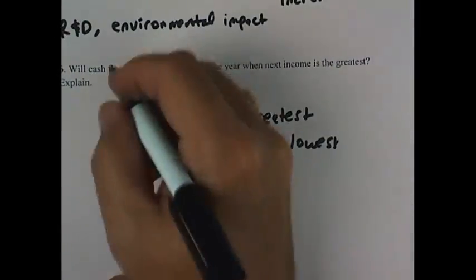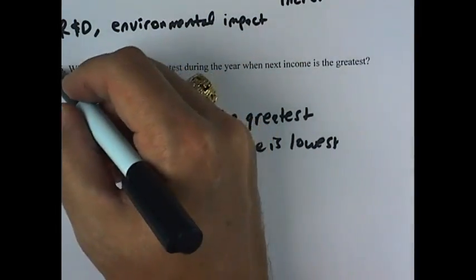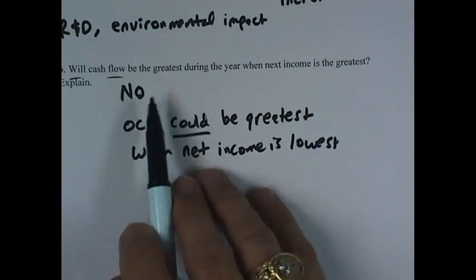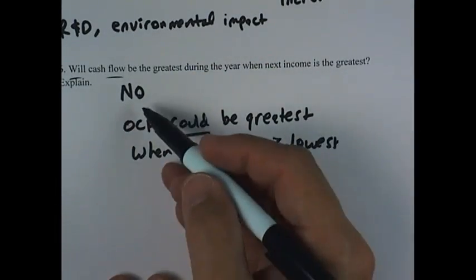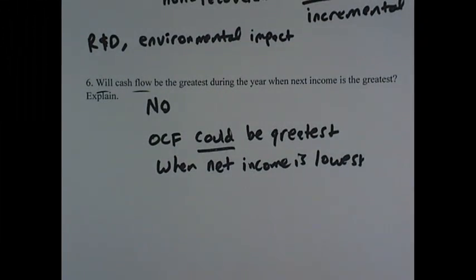So certainly we can say that this statement is false. It says the cash flow will be the greatest during the year when the net income is the greatest, and that is certainly not correct. We've given an example where it's not true. And that is it for the supplemental homework problems for Chapter 10.